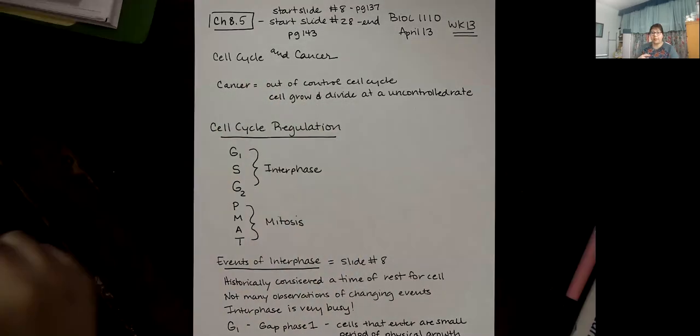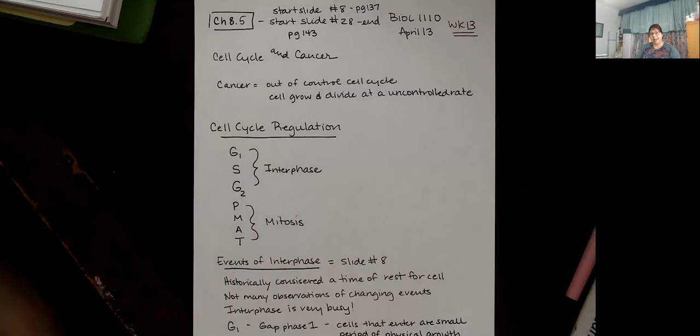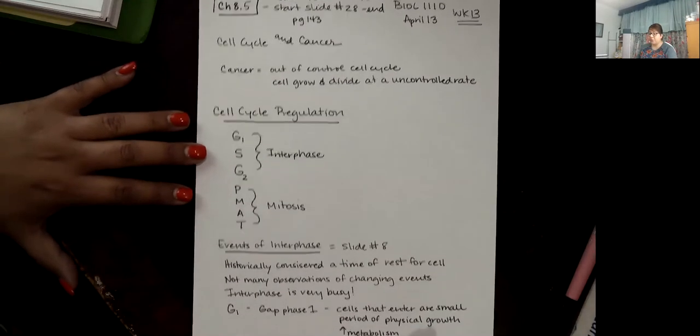So we're talking about cell cycle and cancer today. And what is cancer? This is a disease where the cell cycle is out of control. In other words, cells are growing and dividing at a very uncontrolled rate. Usually they're growing and dividing too fast. Now, why does that happen? That happens because there is a mismanagement in how the cell cycle is regulated.